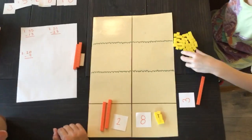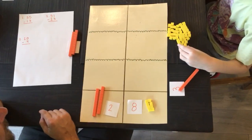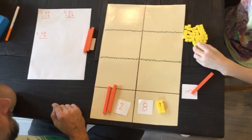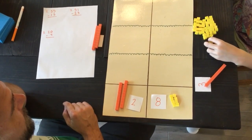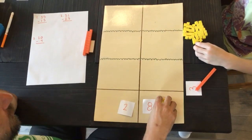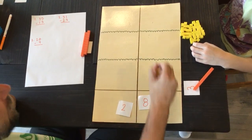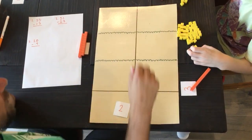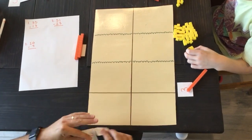So that's how we had to regroup, right? We had to take from our tens place. Want to try another one? It's going to be tricky. Think you can do it? Yep. All right. Let's build 20. And we're going to subtract four. Can you do that?